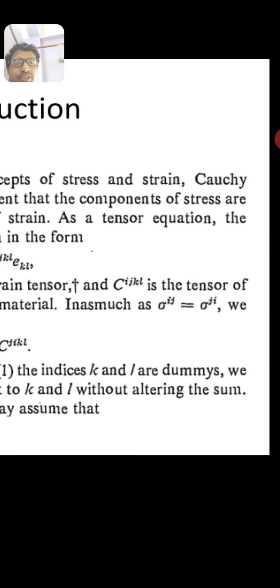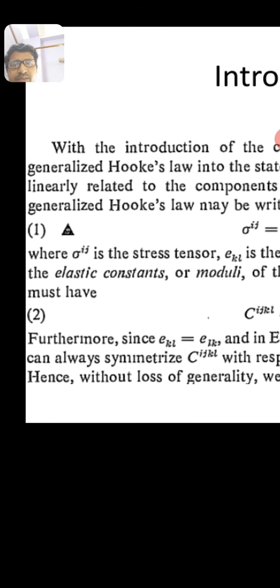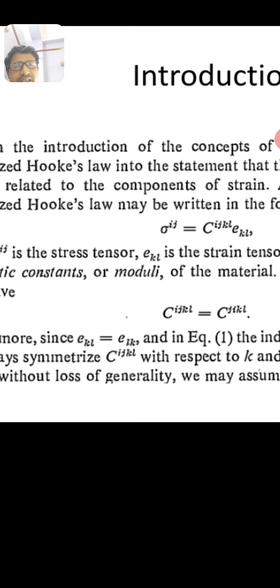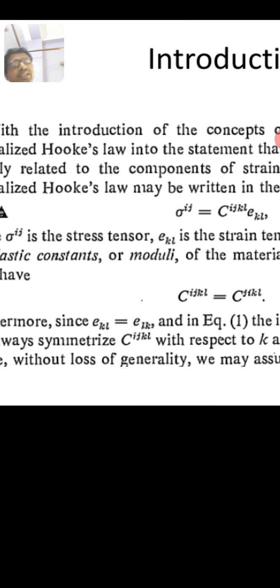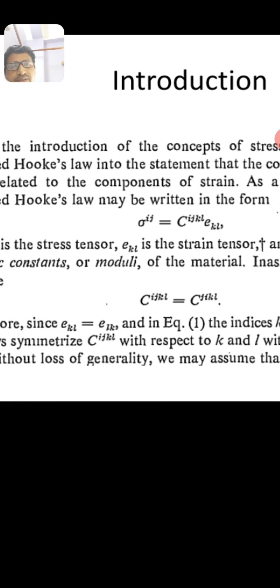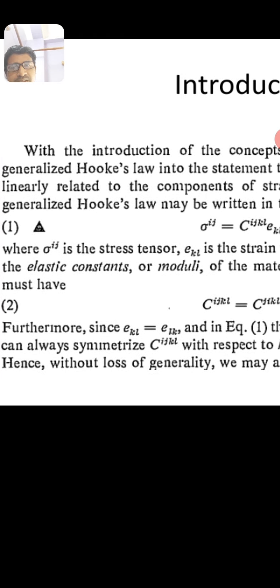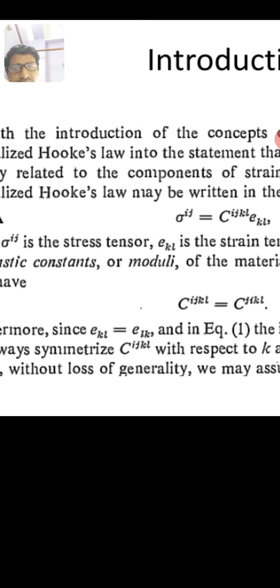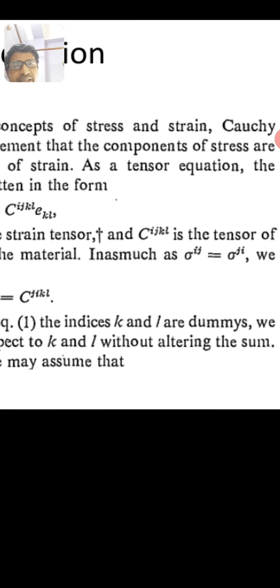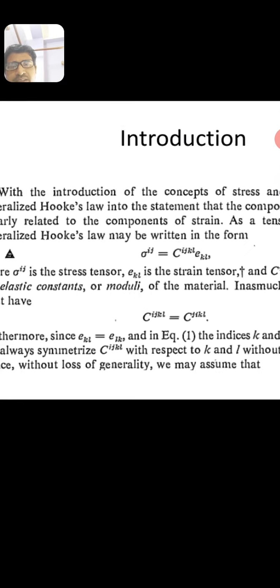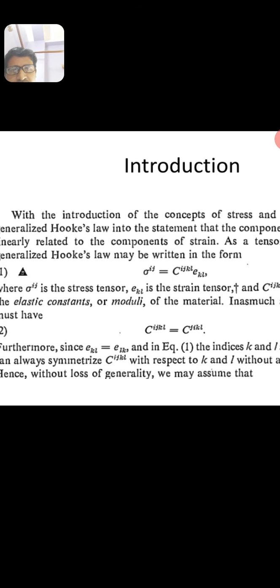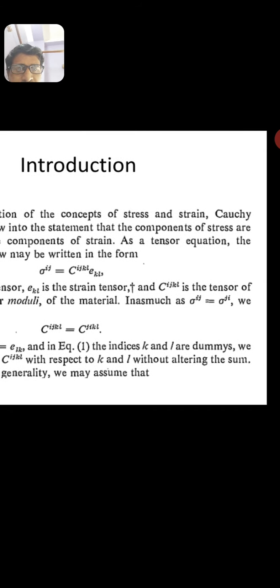Since σ_ij = C_ijkl ε_kl, we may interchange indices: C_ijkl = C_jikl. Furthermore, since ε_kl = ε_lk, K and L are dummy indices and we can always symmetrize C_ijkl with respect to K and L without altering the sum.